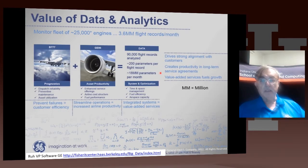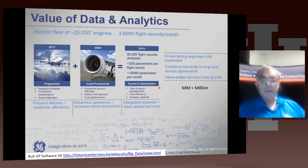There's more data on this about the value of the data: from 25,000 engines and 3.6 million flight records a month, this allows you to drive 18 million parameters every month. And it gives you fuel efficiency, better capacity, and more reliability.